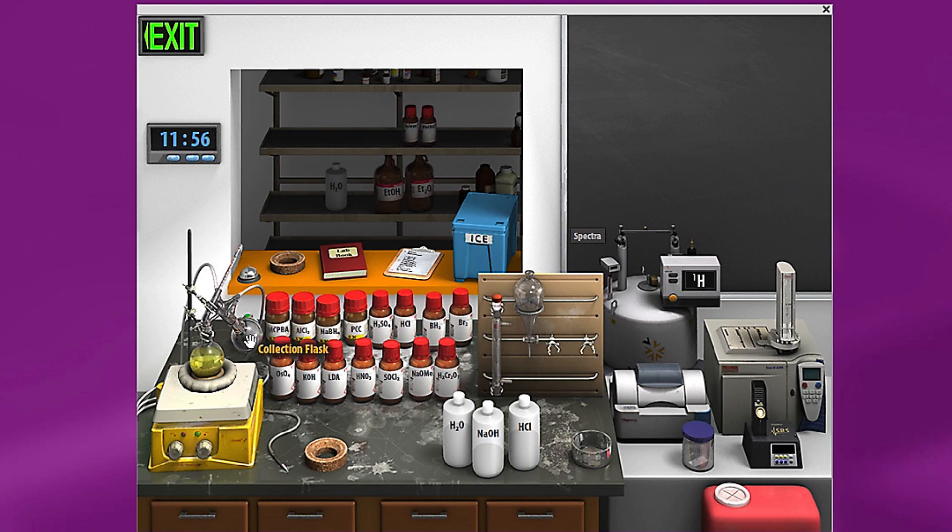This back here is your collection flask. Your products or different compounds that come off at different temperatures will collect back here based on their boiling points. That's how we're going to end up doing our separation. And then this right here is our regular distillation flask, which right now has all three products in it.